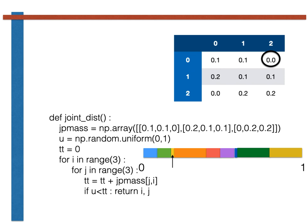This third pass through the loop ends the first pass through the inner loop. In the fourth pass through the double loop, i is reset to 1 and j reverts back to 0. We add the circled element of the joint probability mass function to the variable tt and test if the random variable has fallen within the orange segment of the segmented line. This process continues until we identify the segment of the line that the uniform continuous random variable U has fallen into.